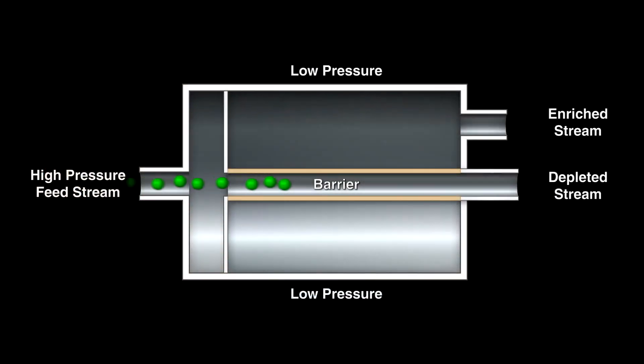The gas flows through a tube encased in a chamber. A pressure difference between the chamber and the tube causes more of the U-235 to pass through perforations in the tube's wall.